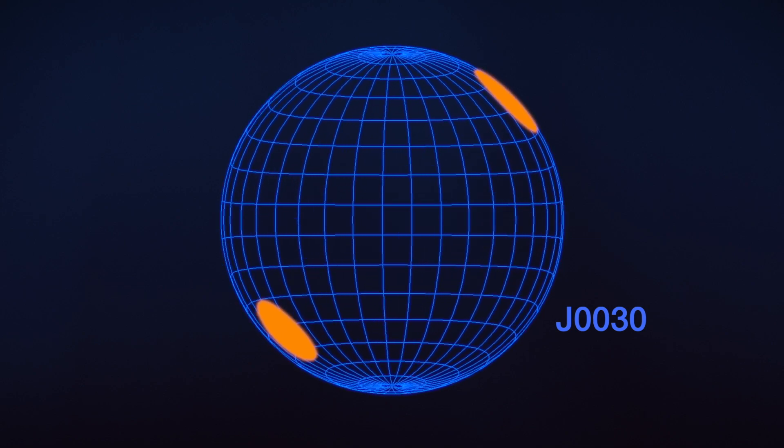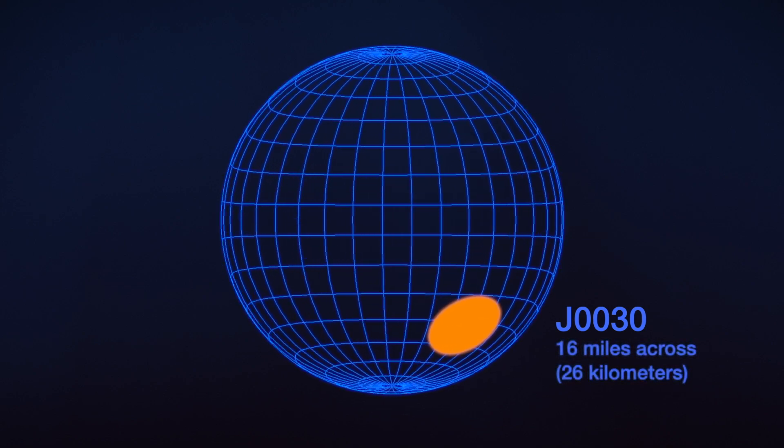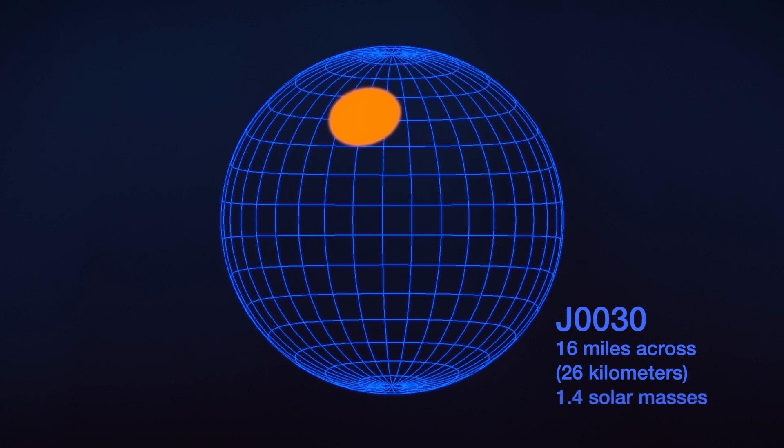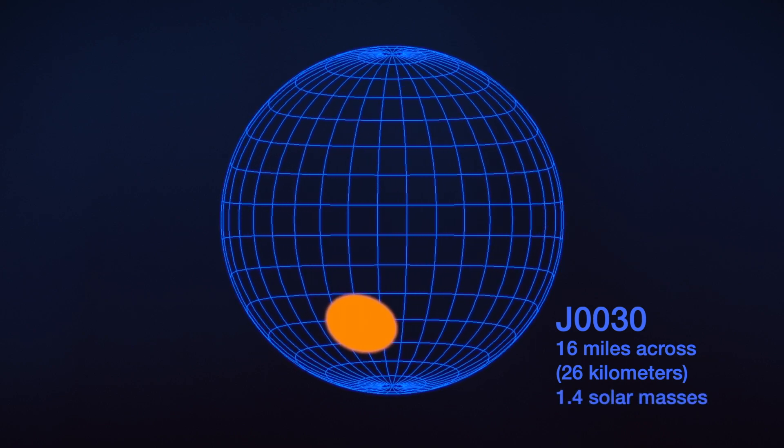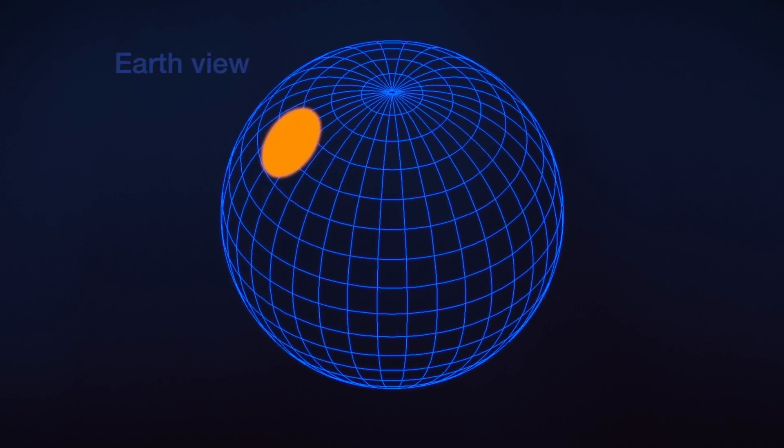The pulsar is around 16 miles across, and about 1.4 times the Sun's mass. This represents the most precise measurement yet of a pulsar's size, with an uncertainty of less than 10%. The spots themselves don't match the textbook image, though.